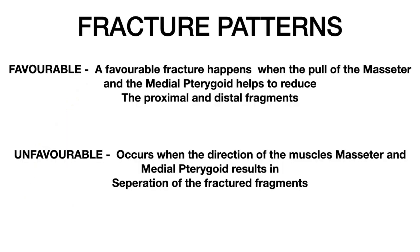Fracture patterns can be classified as favorable and unfavorable. A favorable fracture happens when the pull of the muscles — the masseter and the medial pterygoid — helps to reduce the proximal and distal fragments, meaning there is no displacement of the proximal fragment with respect to the distal fragment. The fracture is reduced by itself, resulting in a close reduction.